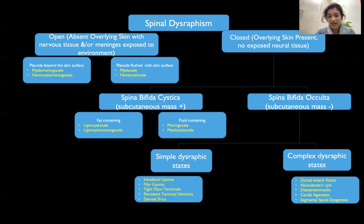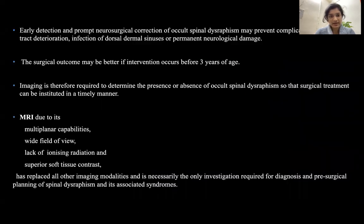Spina bifida cystica can be fat-containing as in lipomyelocele or lipomyelomeningocele, or fluid-containing as in meningocele or myelocystocele. Spina bifida occulta can be simple, as in intradural lipoma, filum lipoma, tight filum terminale, persistent terminal ventricle, or dermal sinus; or it can be a complex dysraphic state, which includes dorsal enteric fistula, neuroenteric cyst, diastematomyelia, caudal agenesis, and segmental spinal dysgenesis.